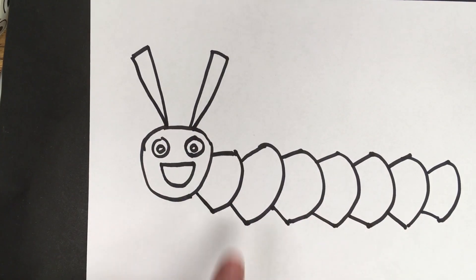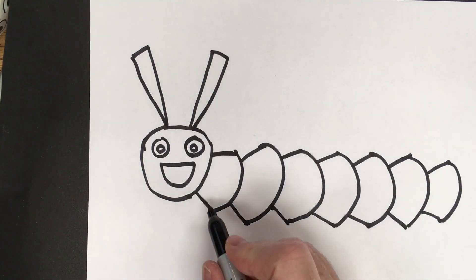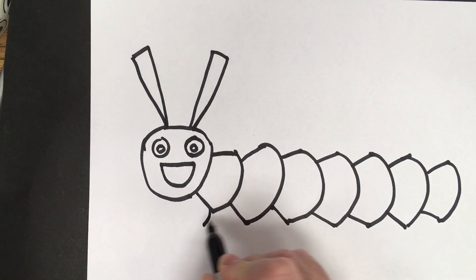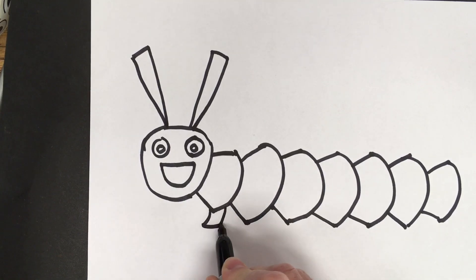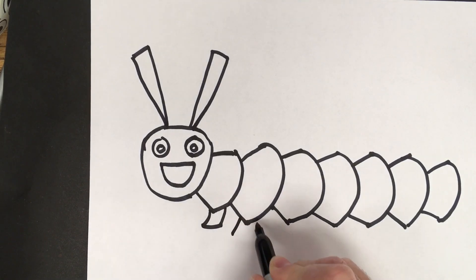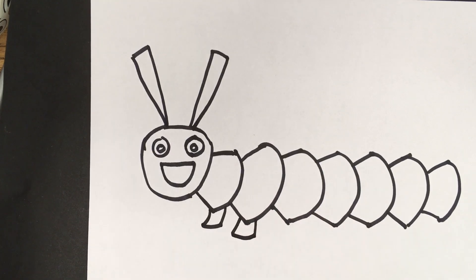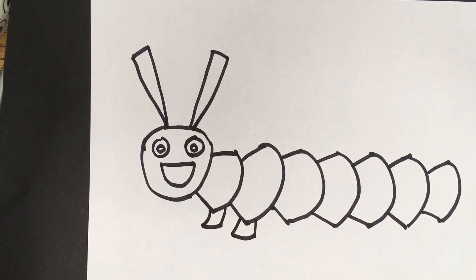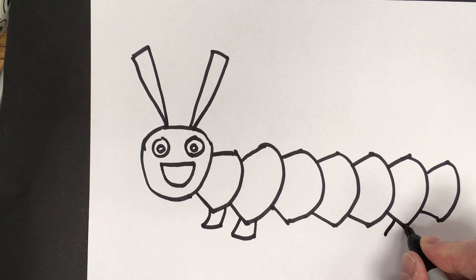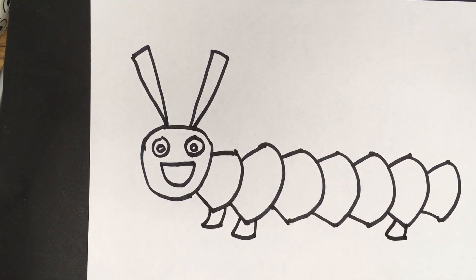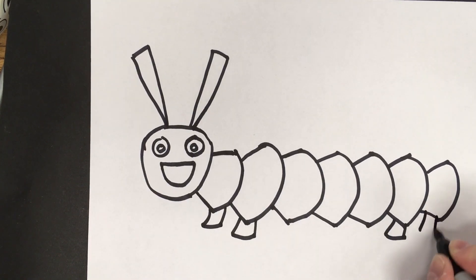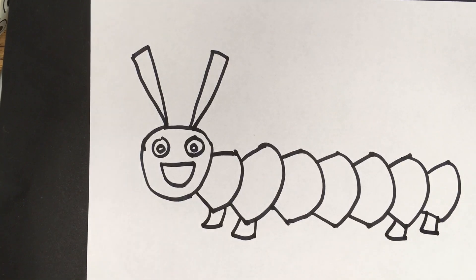His body. Now let's get some legs. And the hungry, hungry caterpillar had two legs on the front, two on the back. So we're going to go down, down, connect. Down, down, connect. And on this side, down, down, connect. Down, down, connect. So now we have the legs of the hungry, hungry caterpillar.